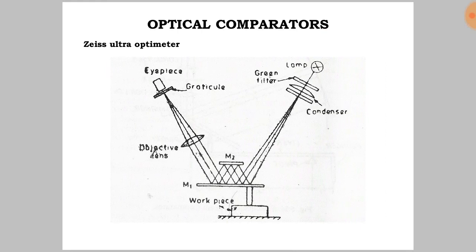Zeiss Ultra Optimeter consists of eyepiece, graticule, objective lens, mirrors, green filter, and lamp.